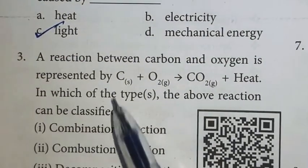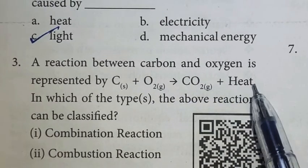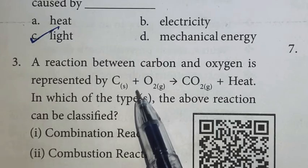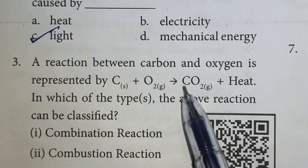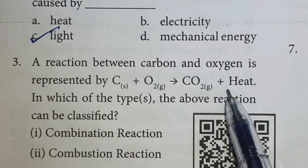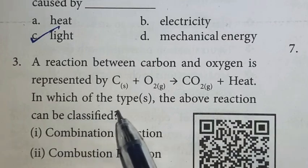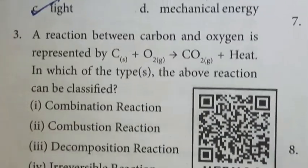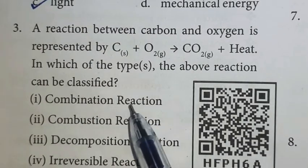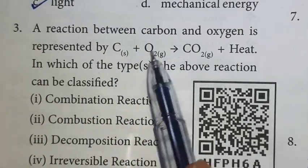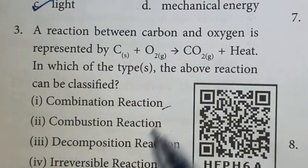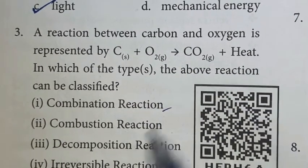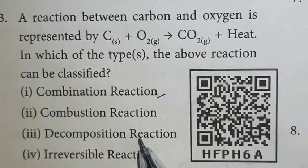Third question: A reaction between carbon and oxygen is represented by C solid plus O2 gas gives CO2 gas plus heat. In which type or types can the above reaction be classified? Combination reaction - yes, it's possible. C and O2 combine together to form CO2. Combustion reaction also possible because heat is evolved. Decomposition is not possible.